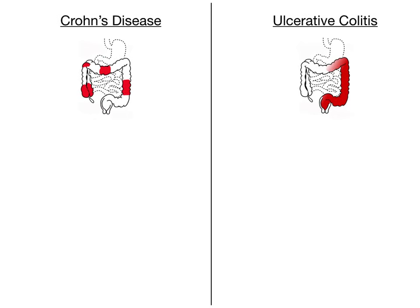What you see in Crohn's disease is referred to as skip lesions — the areas of inflammation literally skip around. You see an area at the terminal ileum, a little area at the transverse colon, one at the descending colon; they don't have to be continuous. You can have inflammation, then a normal area of bowel, then inflammation again. This is why you see the buzzword 'skip lesions' in textbooks and question banks. This can go all the way up to the mouth, including the esophagus.